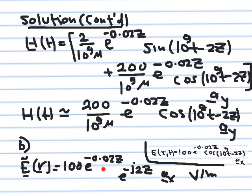The key point is that e^(−0.02z) is a real exponent, so it is treated as a real number — it affects only the amplitude of the phasor, not its phase. The phase of the phasor is minus 2z, as shown here, and the electric field phasor is in the x-direction.